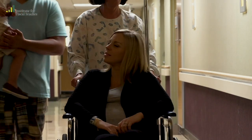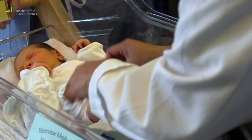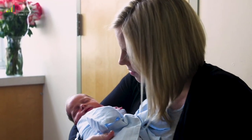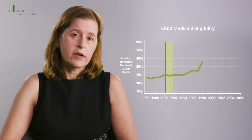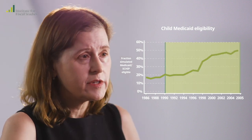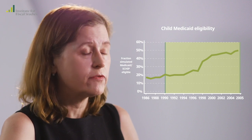Once I discovered that there were these very different trends going on for children and for adults, the next question is why. There was a big change in policy from 1990 up till 2010, which was a huge expansion of health insurance for pregnant women and for children, so that the number of pregnant women who were eligible for public health insurance went up from about 10 percent to 50 percent. A little bit later, the government started expanding health insurance for children as well, and again there was a huge increase from about 10 to 20 percent to 40 to 50 percent of children being eligible for public health insurance.